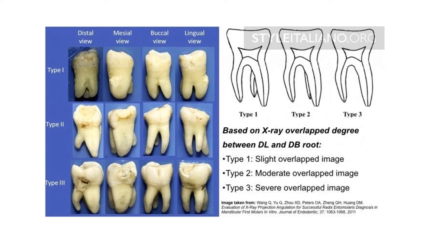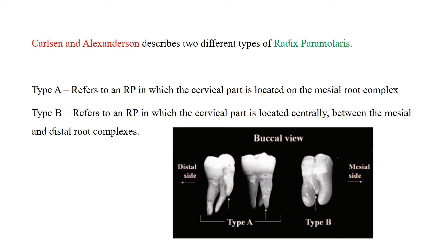Based on X-ray overlap degree, there is another classification: Type 1 is slightly overlapped image, Type 2 is moderately overlapped, and Type 3 is severely overlapped — making it very difficult to identify the radix. Always take preoperative radiographs from two or three angles. For radix paramolaris, Carlson and Alexanderson classified Type A as a radix where the cervical part is on the mesial root complex, and Type B as centrally located between mesial and distal root complexes.